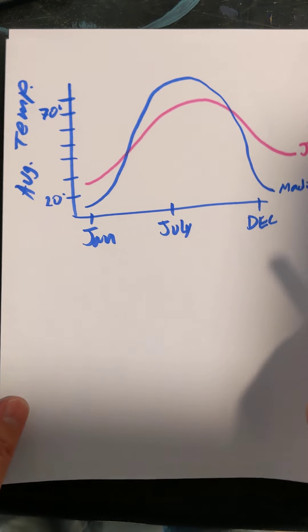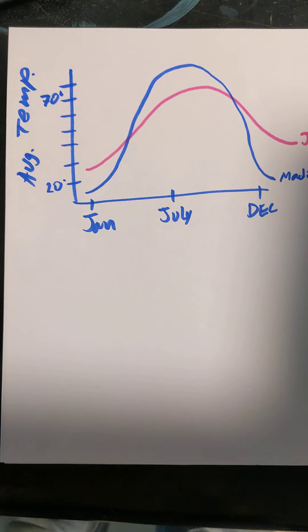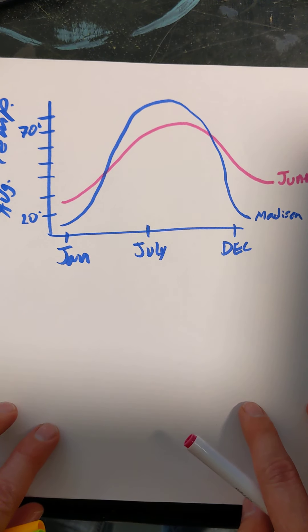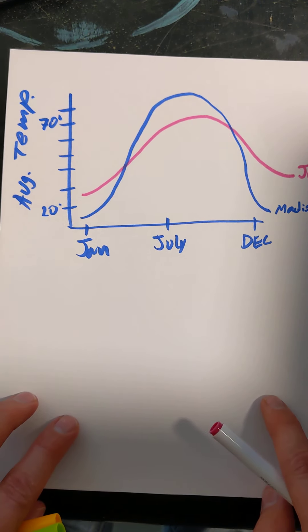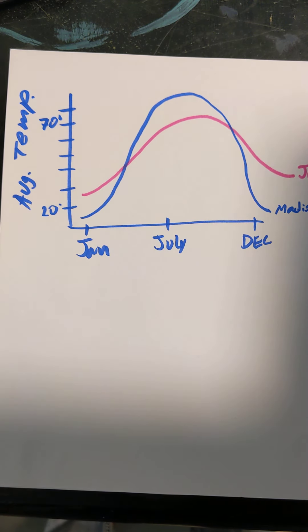All right. On to the next example. So the graph below shows the monthly average temperatures in Fahrenheit for two cities, Madison, Wisconsin, and Juneau, Alaska. So both very cold places. Now, based on the graph, compare the two cities with respect to monthly average temperature over the year. Address both similarities and differences in overall patterns.